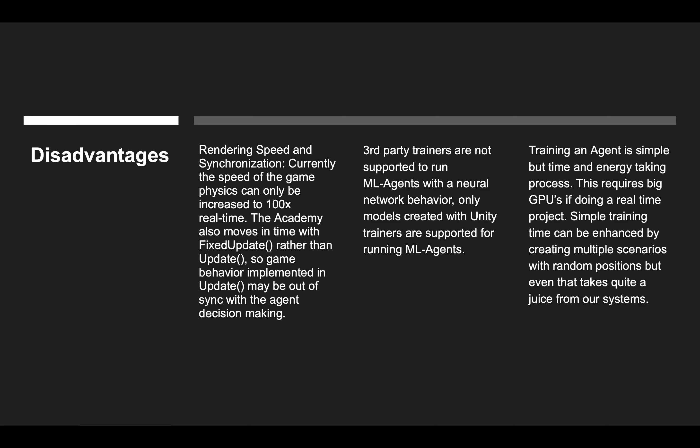Disadvantages — Rendering speed and synchronization: The speed of the game physics can only be increased to 100 times real time. The academy also moves in time with fixed update rather than update, so game behavior implemented in update may be out of sync with the decision making. Third-party trainers are not supported to run ML agents within neural network behavior; only models created with Unity trainers are supported. Training an ML agent is simple but a time- and energy-intensive process, requiring a big GPU for real-time projects.